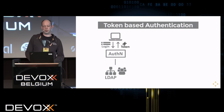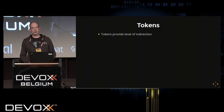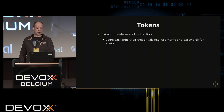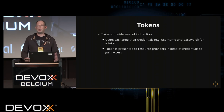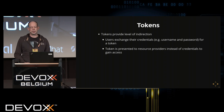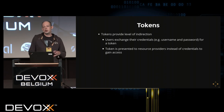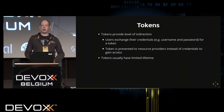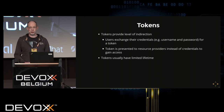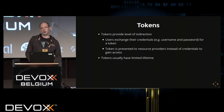Tokens provide a level of indirection: in exchange for credentials, users receive a token they present to resource providers — your applications, microservices, or cloud-based resources — instead of the credentials themselves. The big advantage is that your services never see passwords; they only see tokens. Those tokens usually have a very limited lifetime — valid for only minutes or hours — making them much more secure than actual credentials.